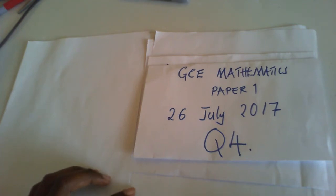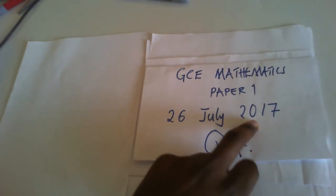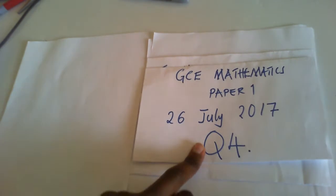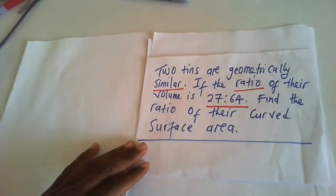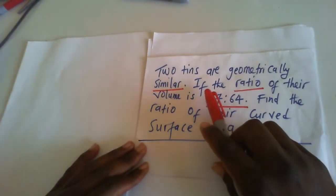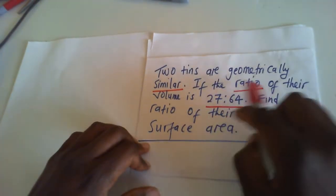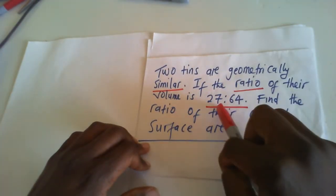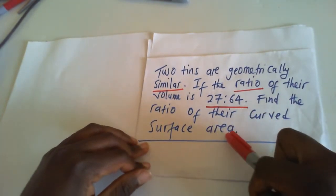Hi, welcome to this video. In this video, we're going to solve one of the GCE questions that came in the 2017 Final Exam, Mathematics Paper 1, which is question 4. Question 4 reads as follows: two things are geometrically similar. If the ratio of their volume is 27 to 64, find the ratio of their curved surface area.